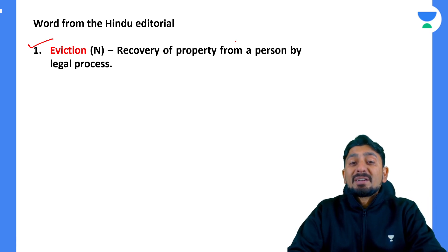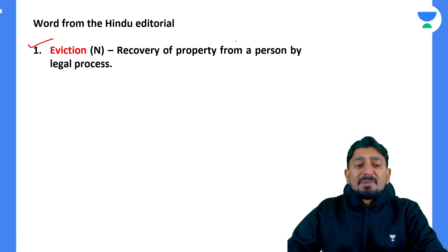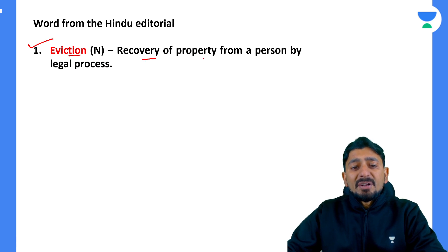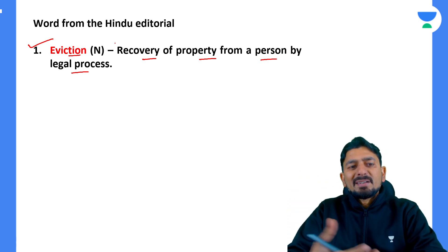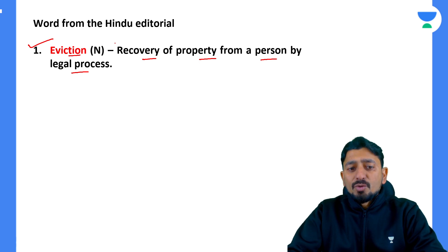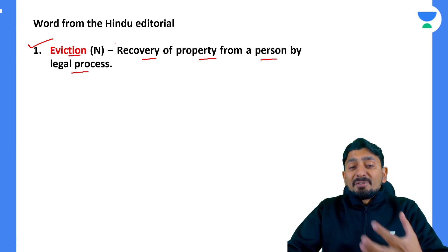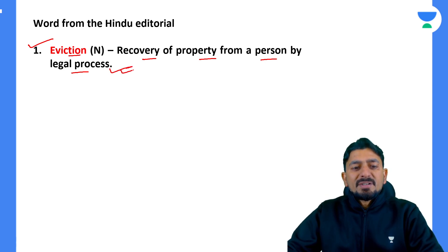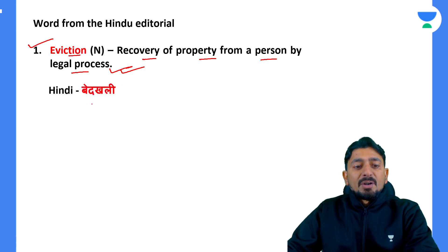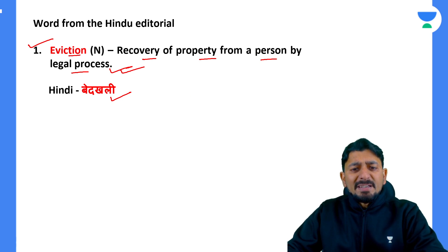This was from the January 9th editorial. Eviction is a word that some people know and some don't. Eviction means recovery of property from a person by legal process. A PIL was filed and the court ordered the removal of those living there — so the court wanted to recover the land from those people. Recovery of property from a person by legal process is called eviction.